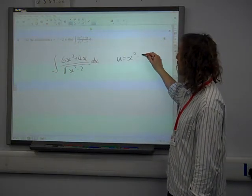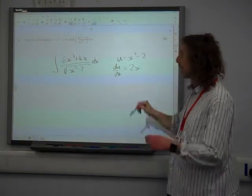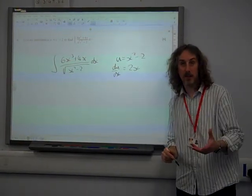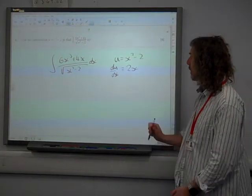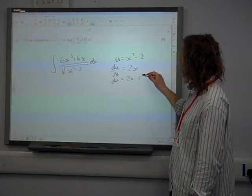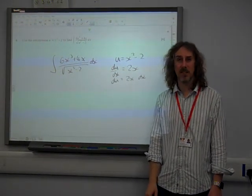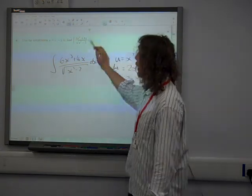We're doing u equals x squared minus 2. So du by dx is 2x. So that's our substitution that we're going to have to do at some point in this. I can't remember how to do this. So du is 2x dx. Right, now this whole thing, this is looking horrible, isn't it? Yeah. Let's just start and see what happens.